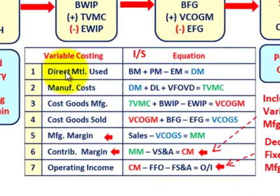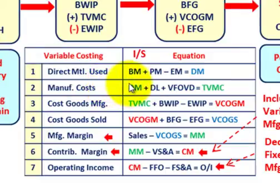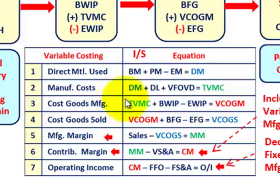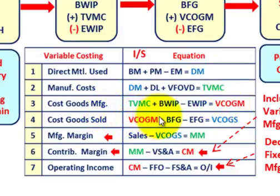On the contribution margin income statement, direct material used is calculated the same way: beginning materials plus purchases minus ending materials. For manufacturing costs, we take direct materials, add direct labor, and add only the variable factory overhead — not fixed. That gives total variable manufacturing costs. Variable cost of goods manufactured equals total variable manufacturing costs plus beginning WIP minus ending WIP. Variable COGS equals variable COGM plus beginning finished goods minus ending finished goods.